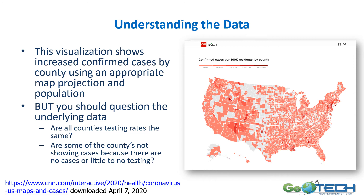Here's one looking at confirmed cases by county with a good map projection. But I wonder if some of the data in the center of the country, Nevada, Southern Oregon, or even some of the southeastern parts are complete — is all the data there? You should question not only the map but also the data on which it's based. Do all counties have the same testing rates, or are they not doing the same testing, so they don't show confirmed cases simply because they weren't tested? Whenever you see a map, look at the metadata — what data it represents and how that data was collected and updated.